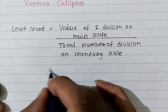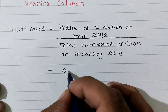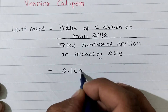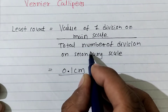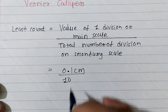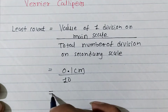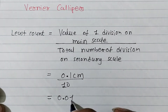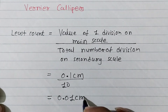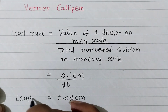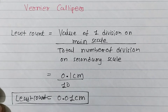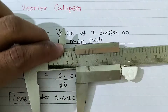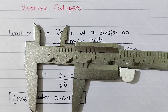The value of 1 division on the main scale is 0.1 centimeter, and the total number of divisions on the secondary scale is 10. So the least count of the Vernier calipers is 0.1 centimeter divided by 10, which equals 0.01 centimeter. From this device, you are able to measure a smallest value of 0.01 centimeter.